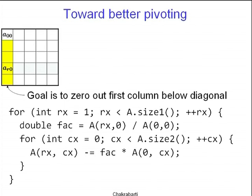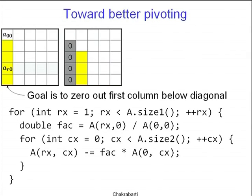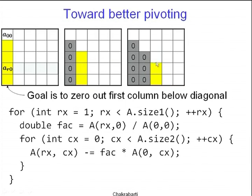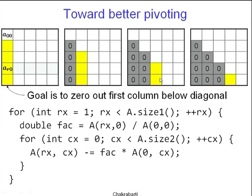The loop looks like this: for rx equal to 1 through number of rows, the factor is A[rx,0] divided by A[0,0], and then over all columns cx we do A[rx,cx] minus-equals factor times A[0,cx]. Once you do this, that particular row will have its first element zeroed out. Then in the second step, once the first column except for the diagonal has become entirely zeroes, you attack the second diagonal element and the column below it, then the third column, and so on.